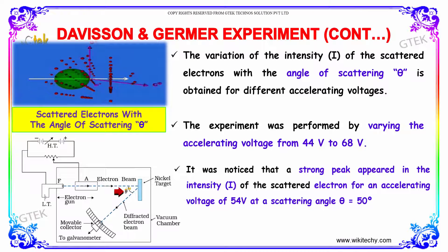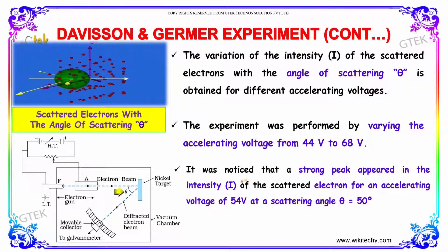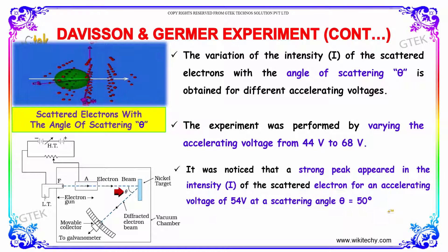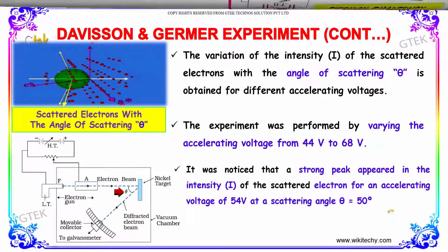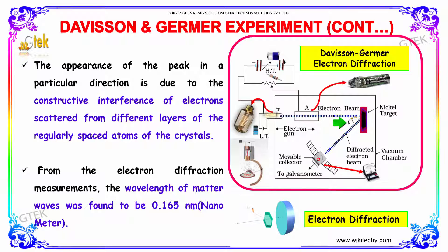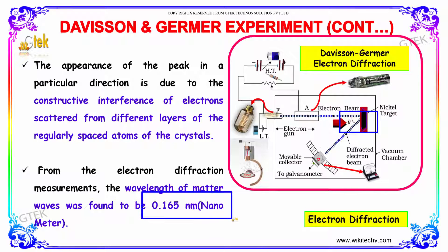The experiment was performed by varying the accelerating voltage from 44 volts to 68 volts. A strong peak appeared in the intensity of the scattered electron for an accelerating voltage of 54 volts at a scattering angle of theta equal to 50 degrees. The appearance of this peak in a particular direction is due to the constructive interference of electrons scattered from different layers of the regularly spaced atoms of the crystal. From this electron diffraction, the wavelength of the matter waves was measured to be 0.165 nanometers.